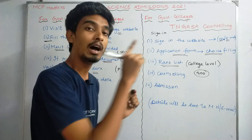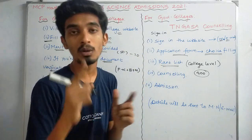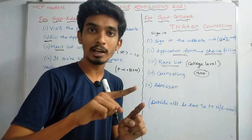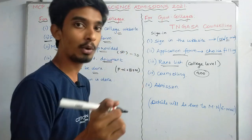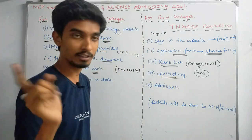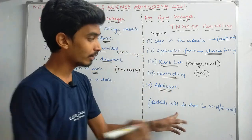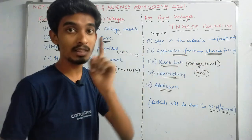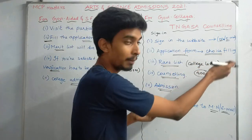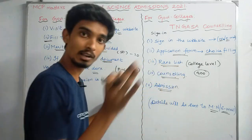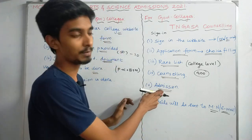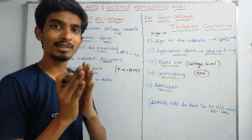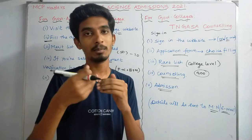So you can apply for your program and rank list. Build your choice in the application form — choose your first preference, second order, etc. You can register in that college. So now for arts and science, whether government-aided or private government college, we have seen a quick video. Thanks for watching, and check the next video on college admissions. Thank you.